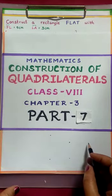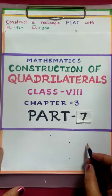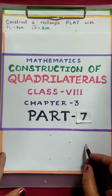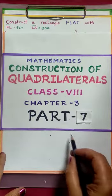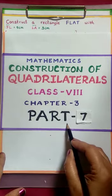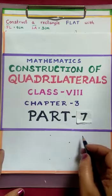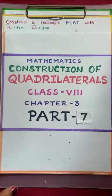Students, we learnt in the previous class how to construct a parallelogram and rhombus. Today, in part 7 of this chapter, we are going to learn how to construct a rectangle and square.